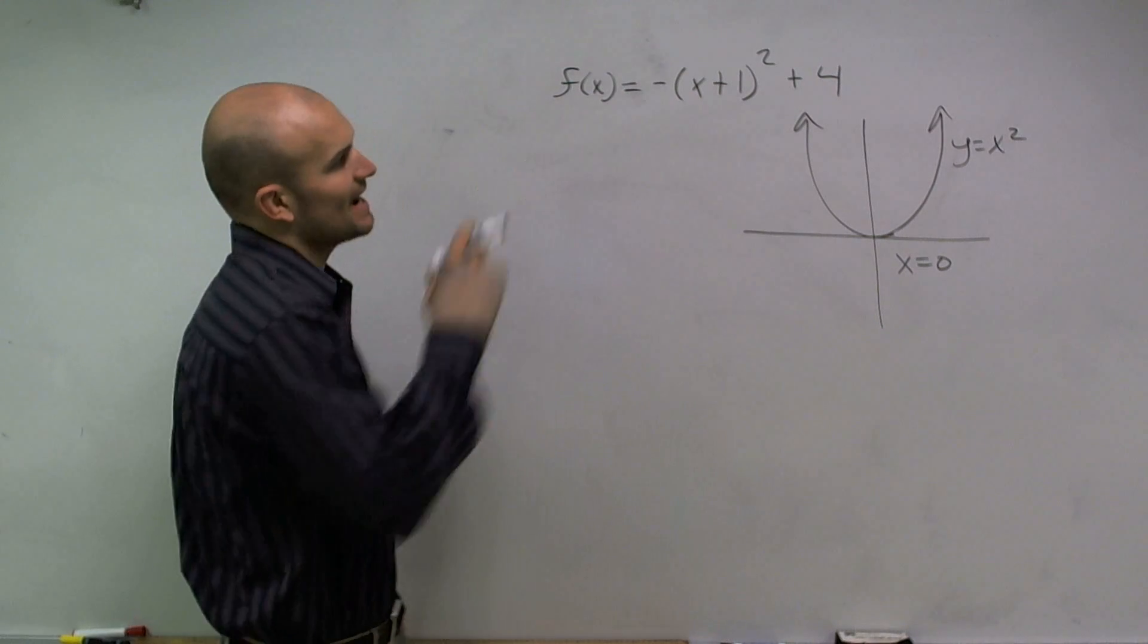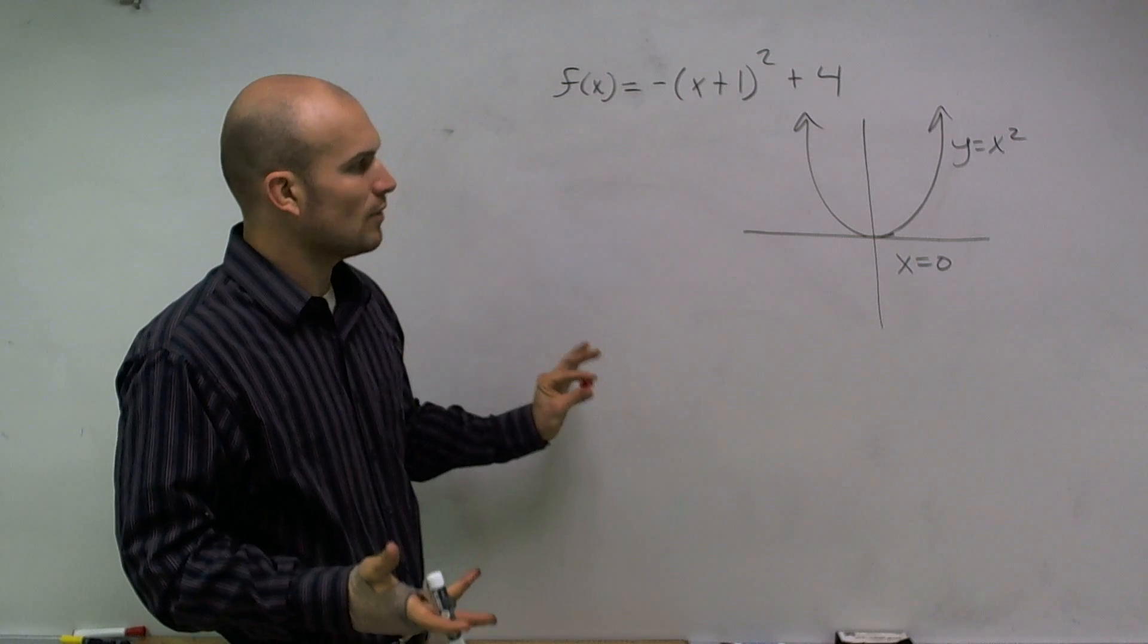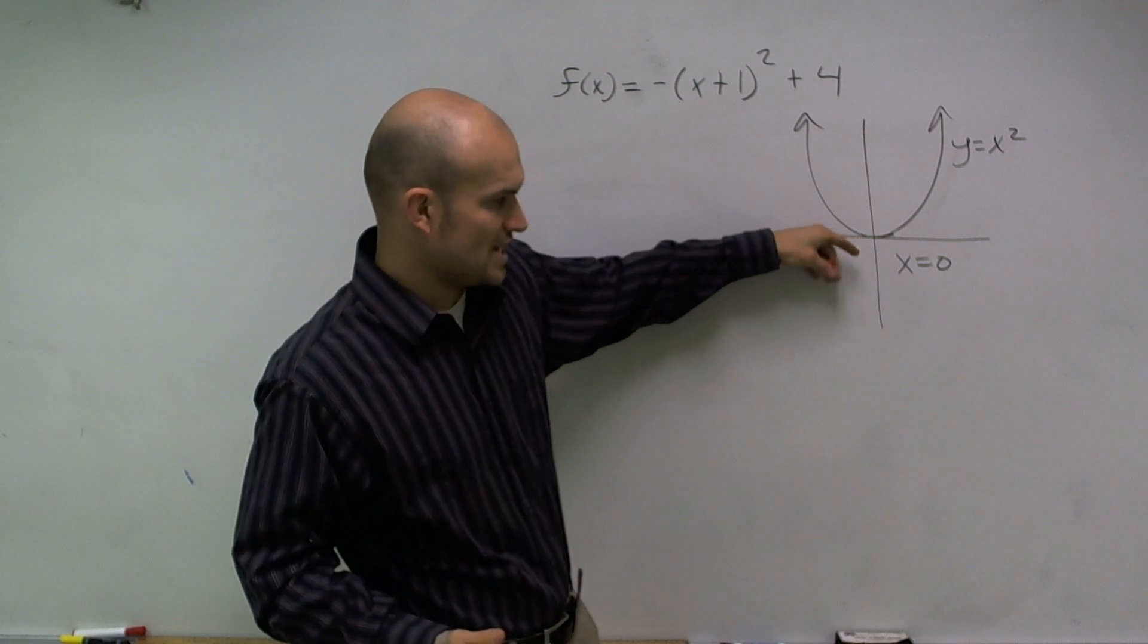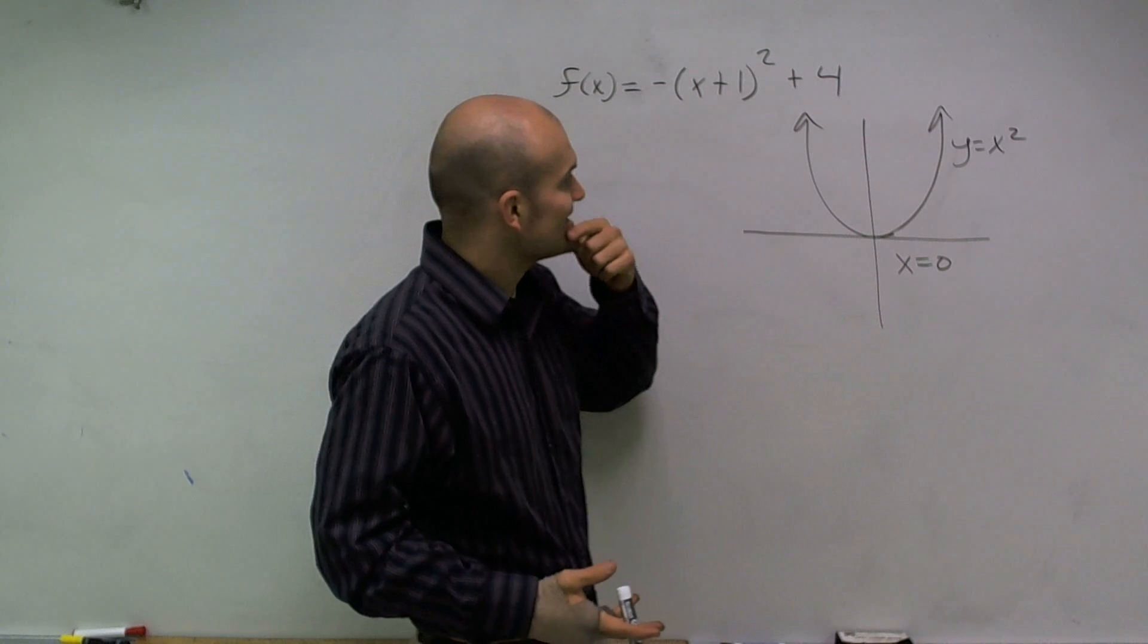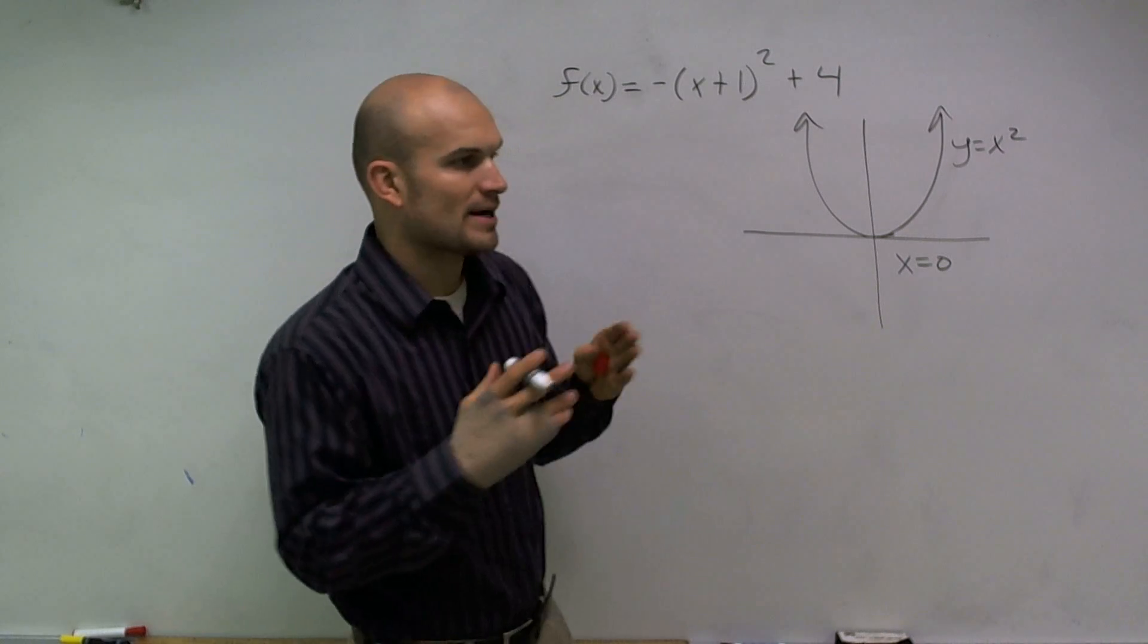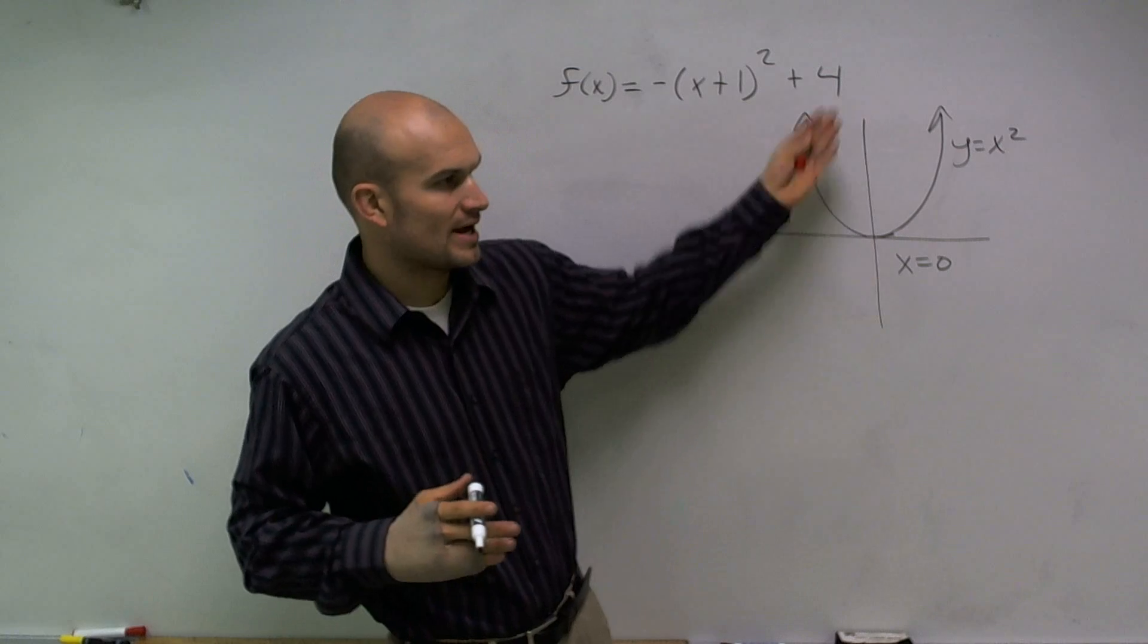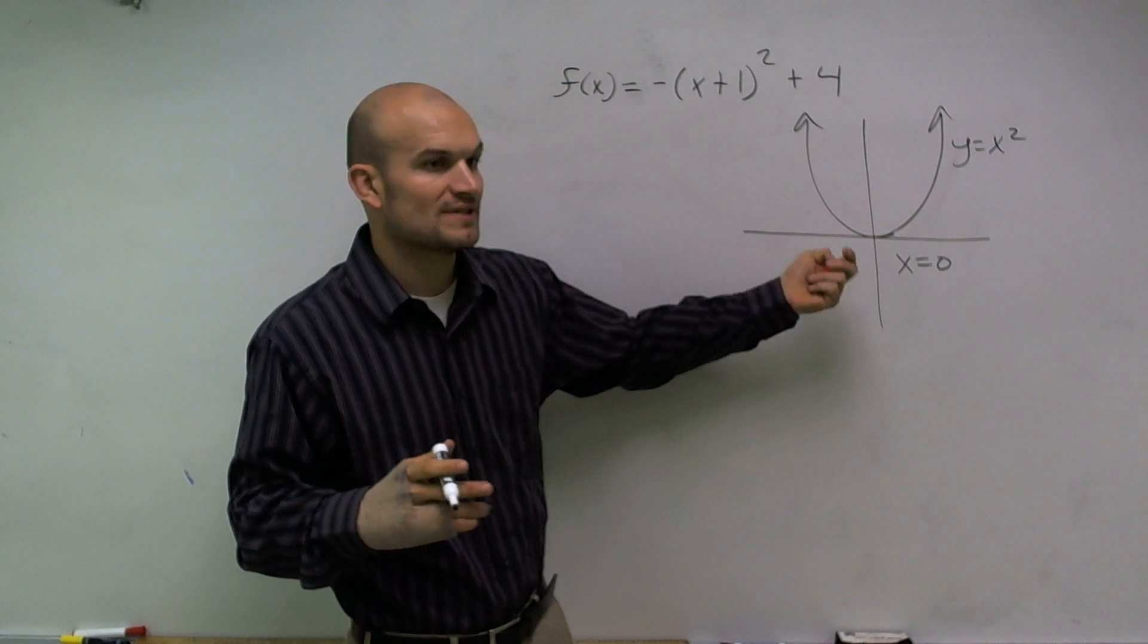Now, to find the axis of symmetry when given a function with transformations, there's a couple ways you can look at this. One thing is the axis of symmetry is not going to change if I move my graph up or down at all, right? And it's not really going to change if I expand or condense my graph. The only way it's going to change is when I shift it left to right.